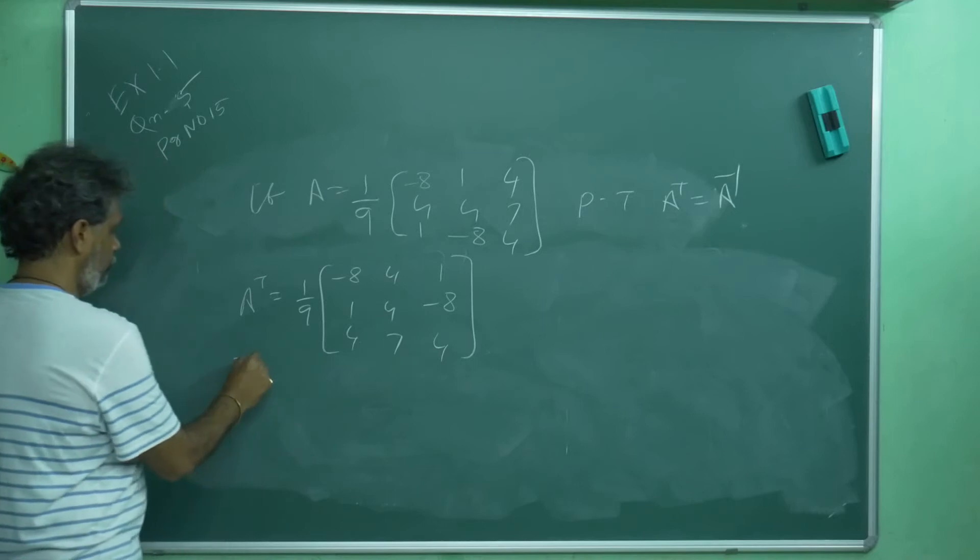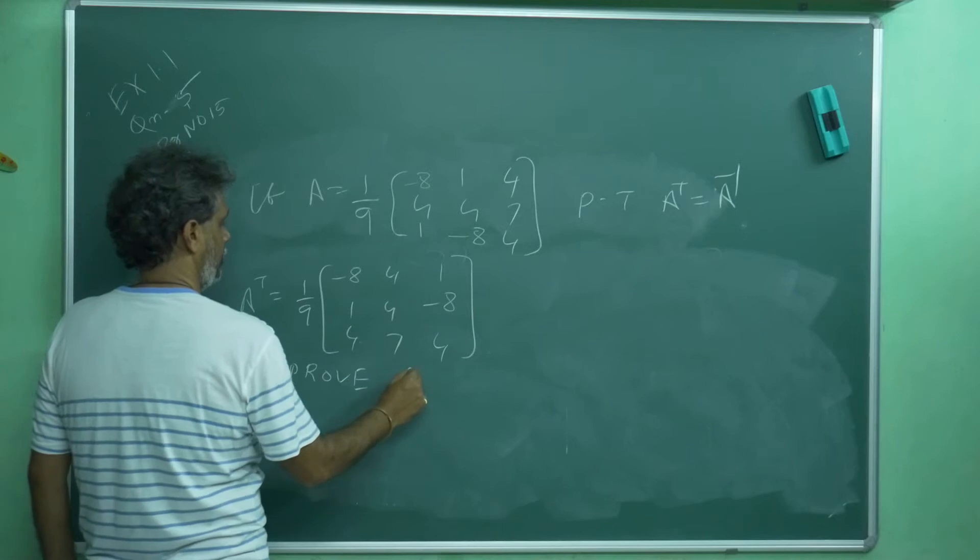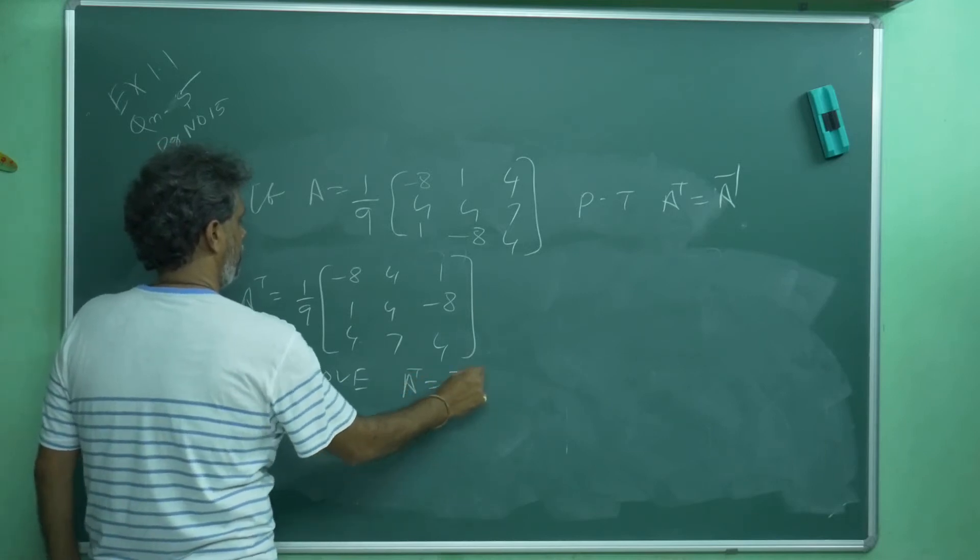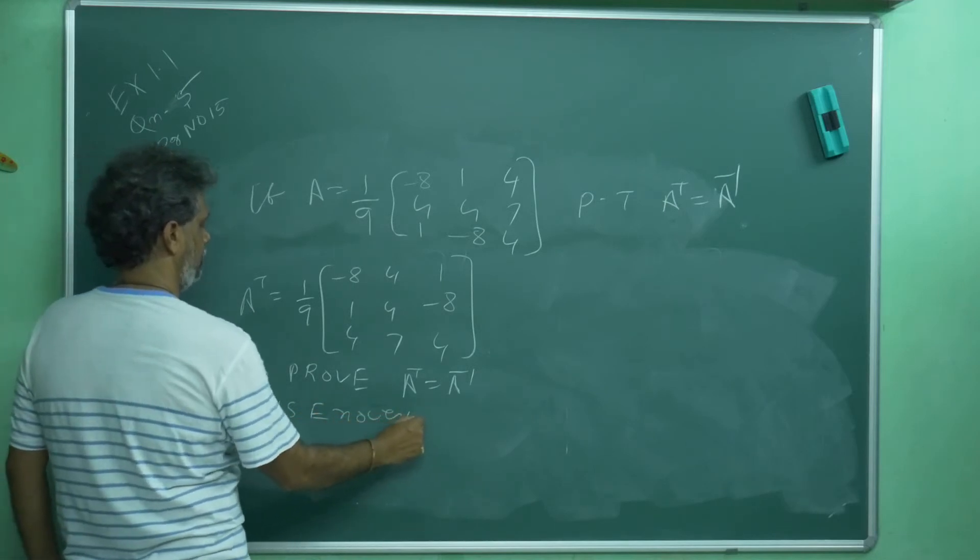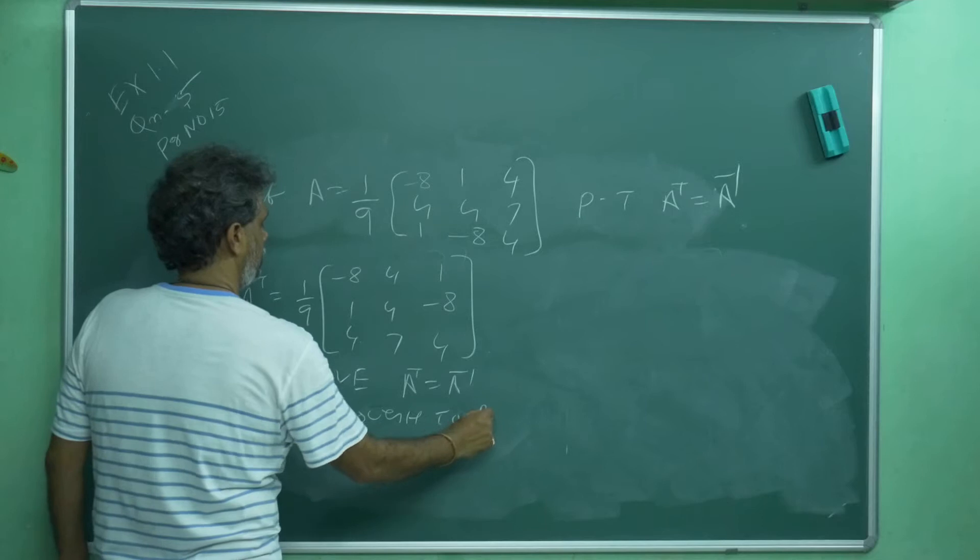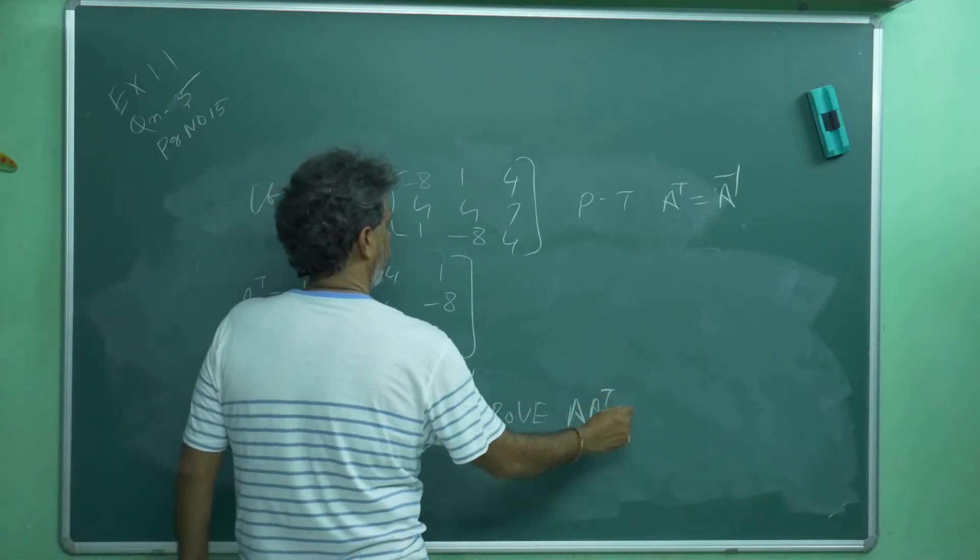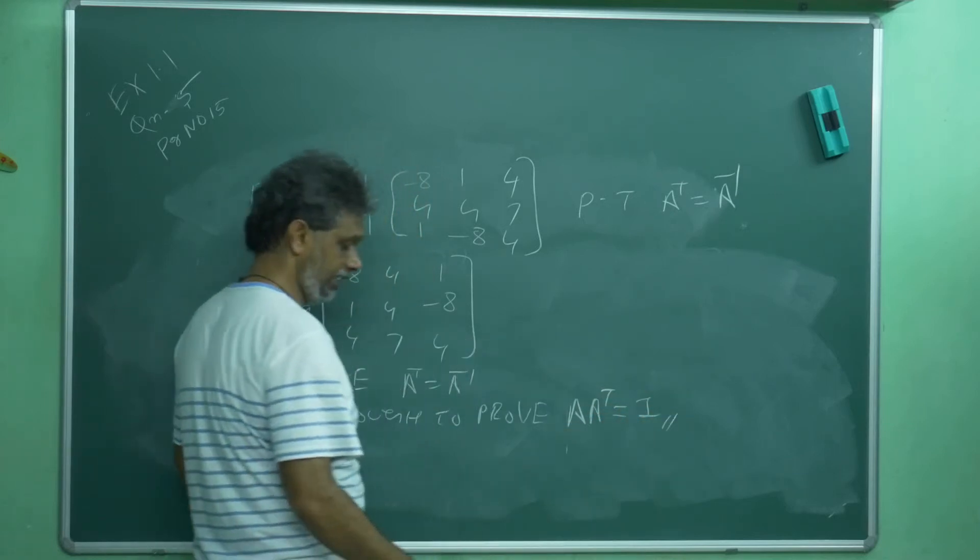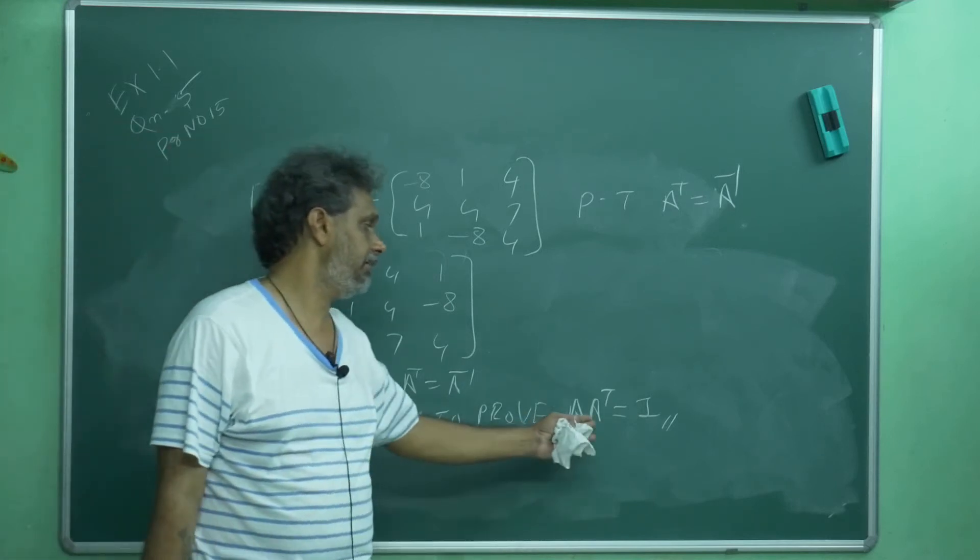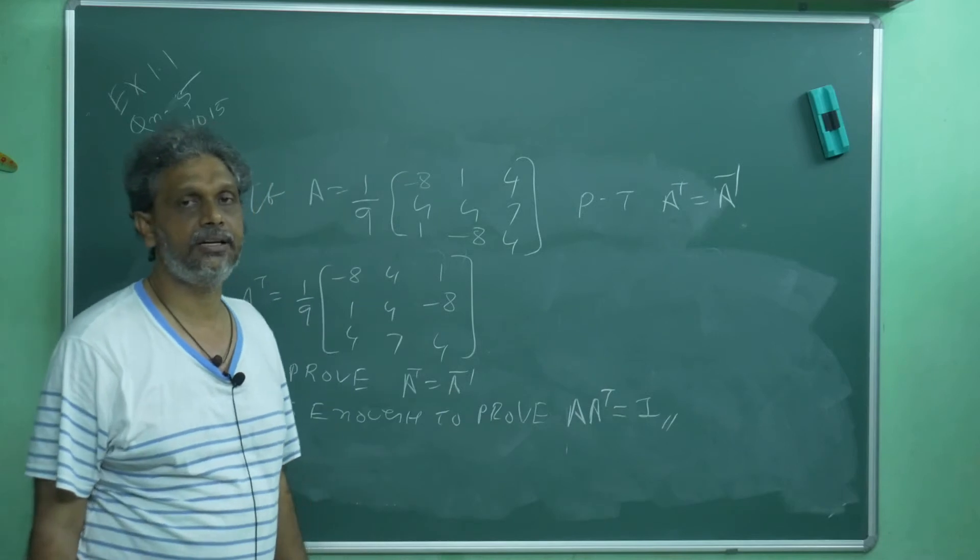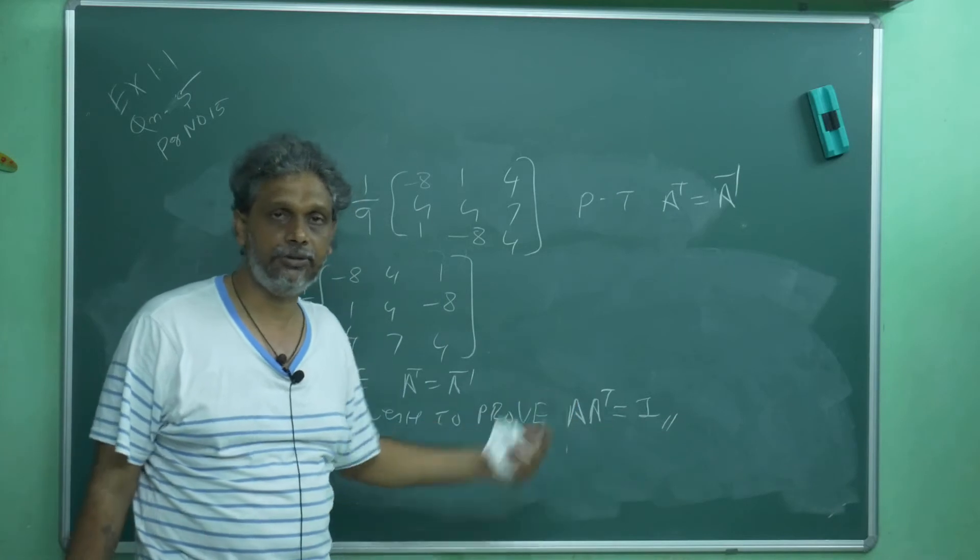Now, to prove A T is equal to A inverse, it is enough to prove A into A T is equal to I. If I am able to prove that A into A T is equal to I, my job is over. From this, I will tell A T is A inverse. I don't want to find A inverse. I want to find A T. It is a very good problem.